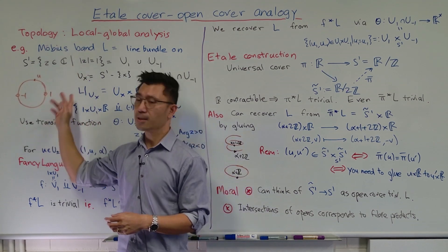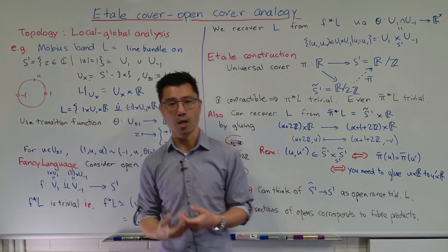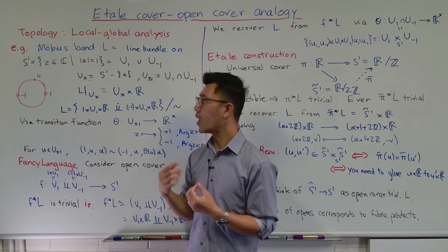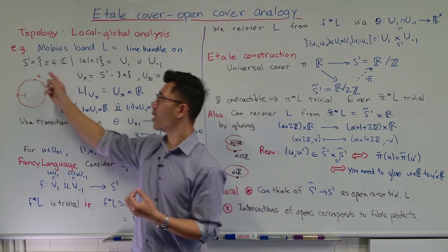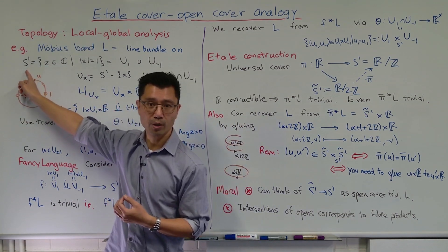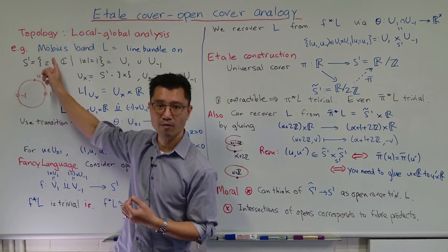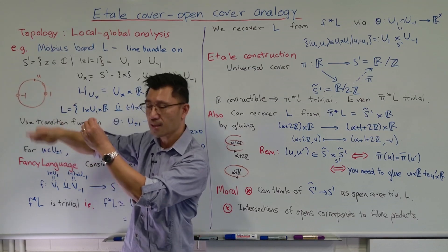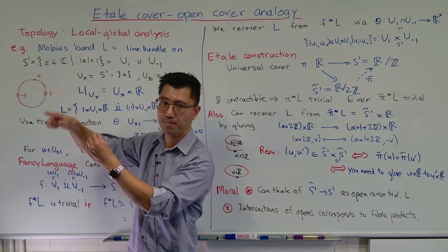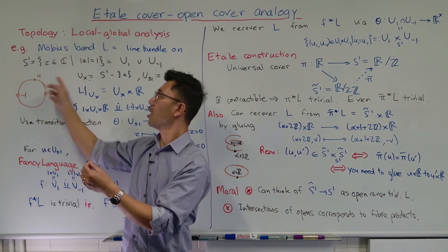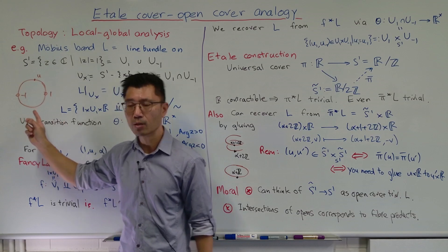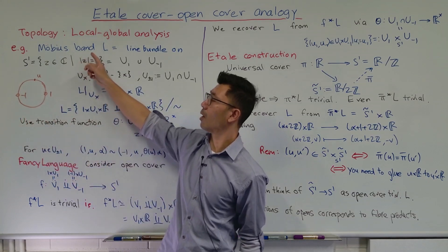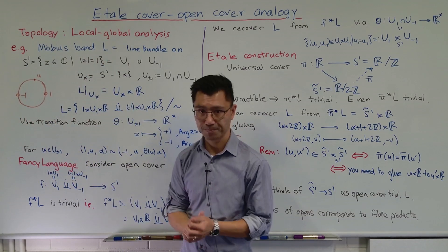So this is an example of something that's not a trivial line bundle. The trivial line bundle would be where you just take S1 and form the Cartesian product of that with R — S1 cross R — that would be just a cylinder. So here we don't have this trivial line bundle; we have the first non-trivial line bundle, which is the Möbius band.